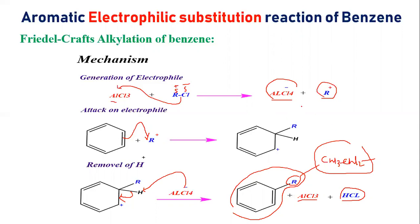For example, suppose we want to introduce the isopropyl group in the benzene ring.